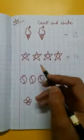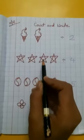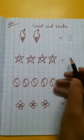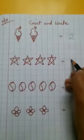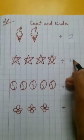Next one is how many stars? One, two, three, four. So we have to write here number four.